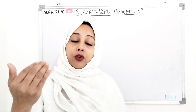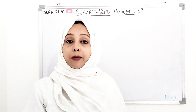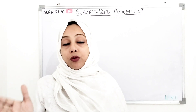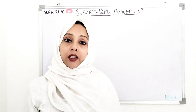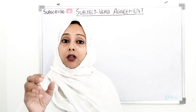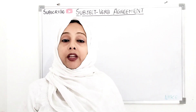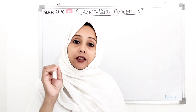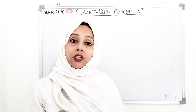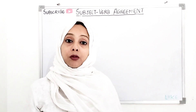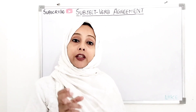Now let's talk about the rules. First of all, we will discuss when verbs agree with the subject in plural form — that is, when we use plural verbs. The first rule: if there are two or more singular subjects joined together by using AND, then the verb goes with a plural verb.